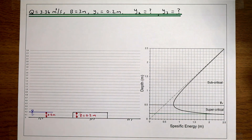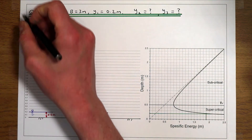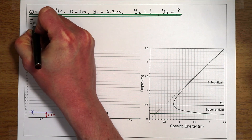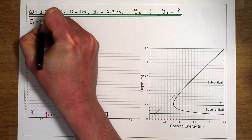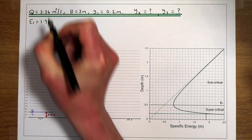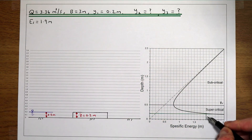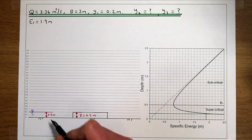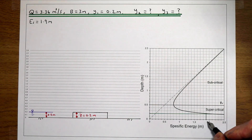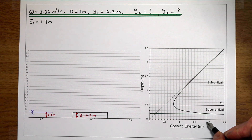The specific energy at point number one in this flow is going to be 1.9 metres. The point where our flow depth of 0.2 metres intersects that black line — drawing a line down — gives us our initial specific energy of 1.9 metres.